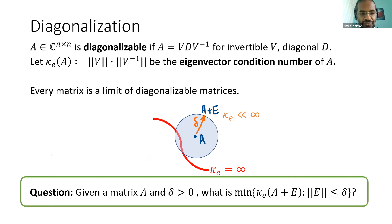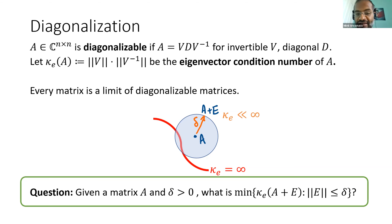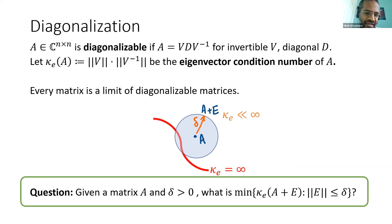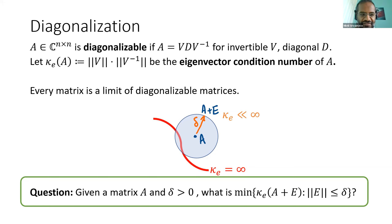The qualitative statement is that every matrix can be approximated by diagonalizable matrices. The quantitative question is: how well can a matrix in general be approximated by matrices with small eigenvector condition number? This picture is a cartoon where the red curve is the set of non-diagonalizable matrices; you're given some matrix A and you want to find a nearby matrix with the smallest possible eigenvector condition number, which depends on delta.